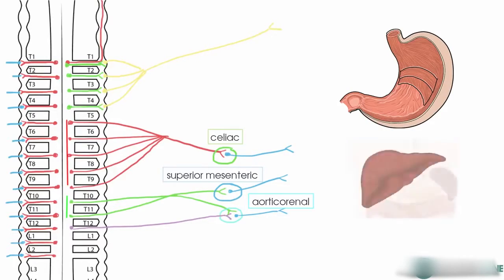If we look at the liver, for example, you've got the common hepatic artery going into the proper hepatic and then dividing into the right and left hepatic arteries. And the innervation will follow from that celiac ganglion along this blood supply to supply the liver.